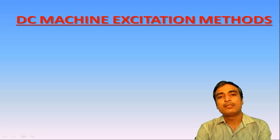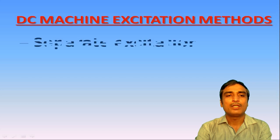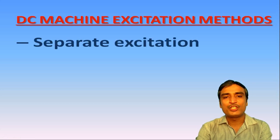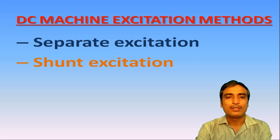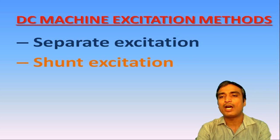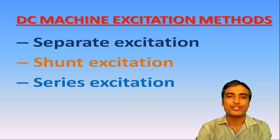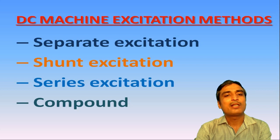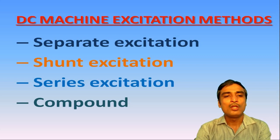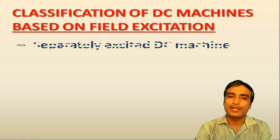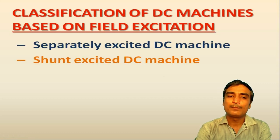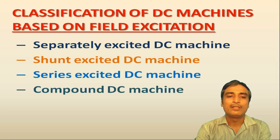Generally, we have four common methods to excite the field winding of DC machines. Number one, separate excitation, in which the field winding is connected to an independent DC source. Number two, shunt excitation, in which the field winding is connected in parallel to the armature winding. Number three, series excitation, in which the field winding is connected in series to the armature winding. And number four, compound, which comprises a combination of both the shunt and series field excitations. Based on these methods, DC machines can broadly be classified into separately excited, shunt excited, series excited, and compound DC machines.